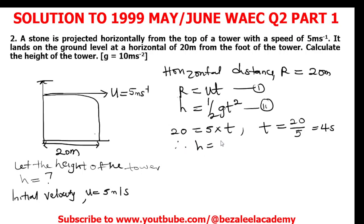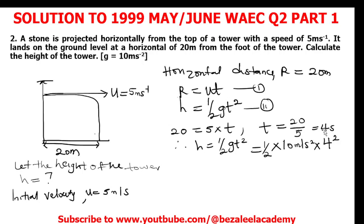Therefore, h = ½gt². Substituting: h = ½ × 10 × (4)². Since 4 squared is 16, we get h = ½ × 10 × 16. That gives 10 × 16 = 160, divided by 2, which finally gives us 80. So h = 80 meters.